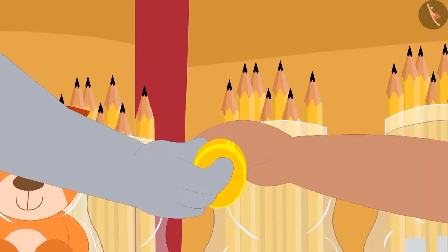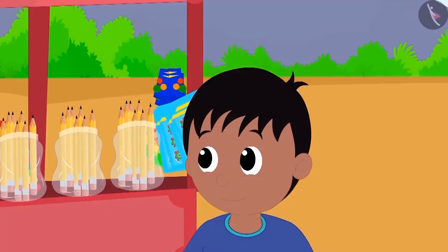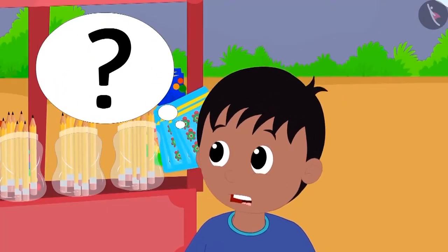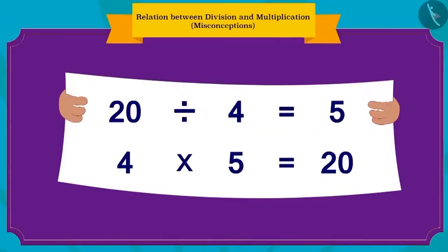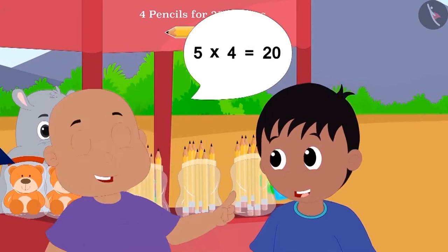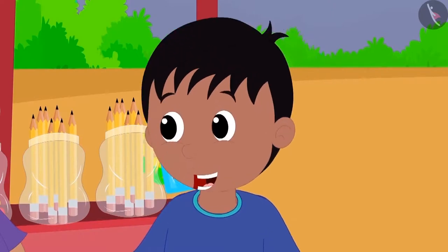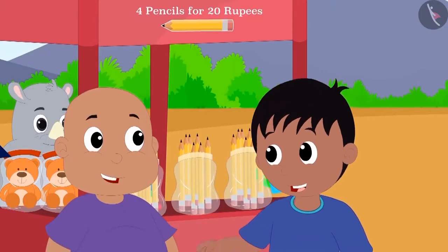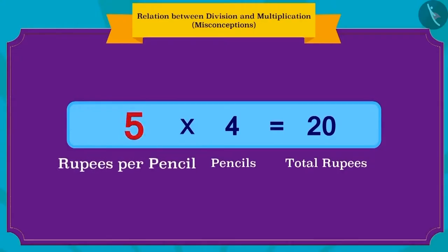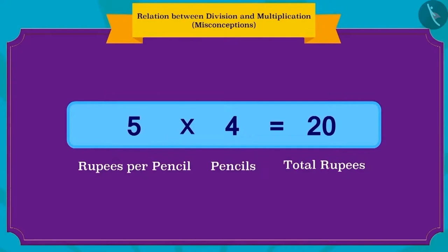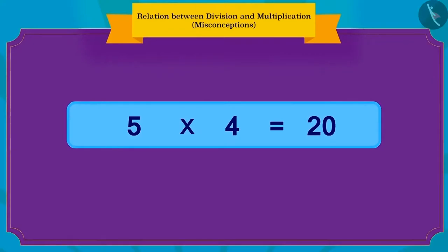Babalu quickly handed five rupees to the shopkeeper and bought the pencil. Babalu wrote these division and multiplication equations for Raju and told him he found the answer for division by using multiplication. Raju got excited and said he could also write the multiplication another way: five rupees per pencil and four pencils, so the total amount is 20 rupees. And yes, Raju has written this correctly — we can write any multiplication in two ways.